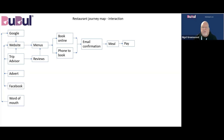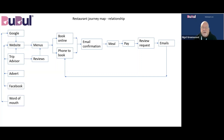Then you move to the ongoing relationship. Once they've paid and left the restaurant, they're going to get a review request and then start to receive regular emails advertising events and different meals at the restaurant. So potentially they maintain being a customer — they'll go back to phone or book online, and that circle will continue as long as they remain a customer.